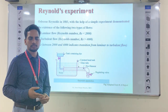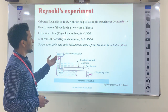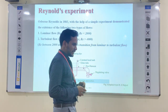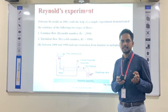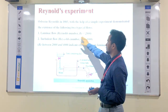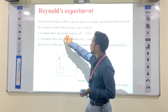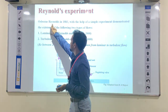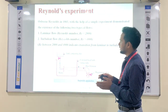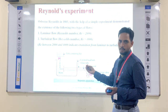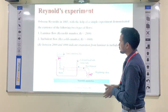Coming to the next topic: Reynolds experiment. Osborne Reynolds, in the year 1883, made one experiment and demonstrated a number now called the Reynolds number. The Reynolds number is a non-dimensional number named after Osborne Reynolds. From this number we can define different types of flow: laminar flow, turbulent flow, and transition.